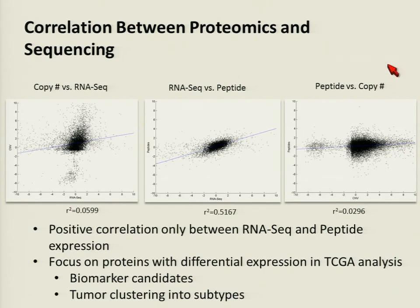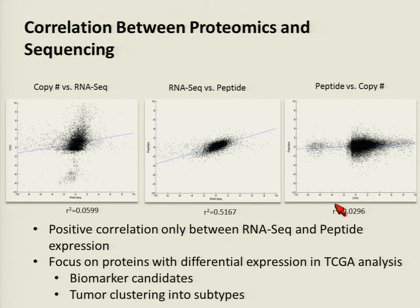We can also look at correlations between proteomics and sequencing. We've plotted copy number versus RNA-seq, which has very low correlation; RNA-seq versus peptide, which has a pretty nice correlation; and peptide versus copy number, which again has very low correlation. We're going to focus on proteins with differential expression within the TCGA analysis as biomarker candidates and to cluster tumors into new subtypes.